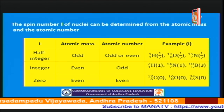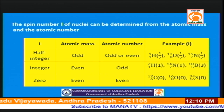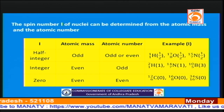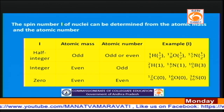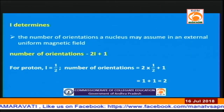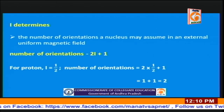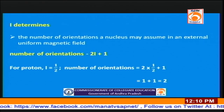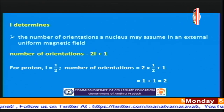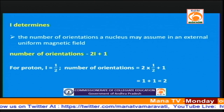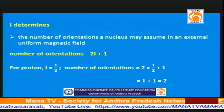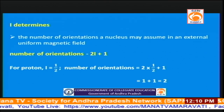The I value is a very important parameter for the nucleus and the I value can be calculated based on the atomic mass and atomic number of the nucleus. I determines the number of orientations a nucleus may assume in the presence of an external magnetic field. The number of orientations a particular nucleus may assume in the presence of a magnetic field is given by 2I plus 1.